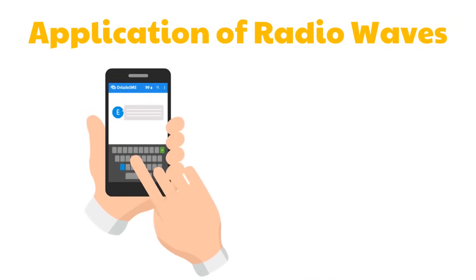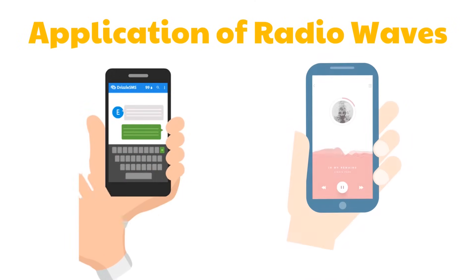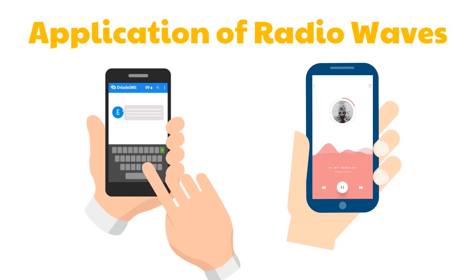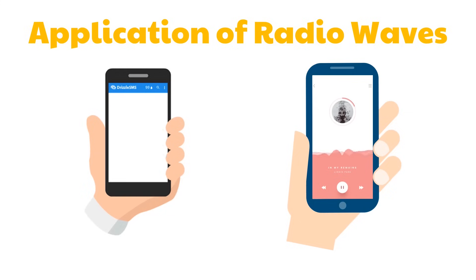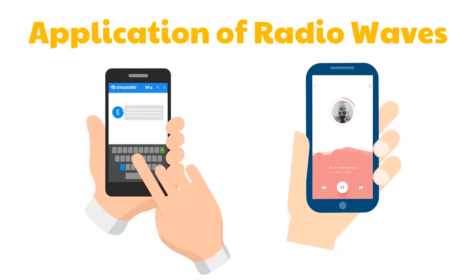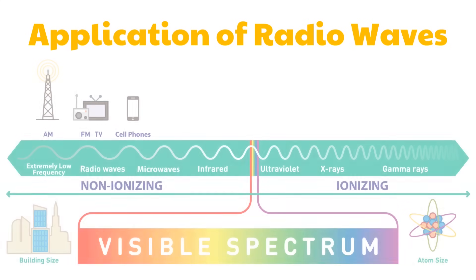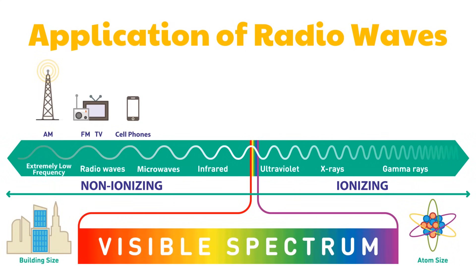Today, conversations, photos, and even music can be transmitted through air over thousands of miles because of radio waves. Wireless communication has become possible through transmission and reception of these radio waves. Radio waves can be transmitted through empty space and have the longest wavelength in the electromagnetic spectrum. They are produced by making electrons vibrate in an antenna.